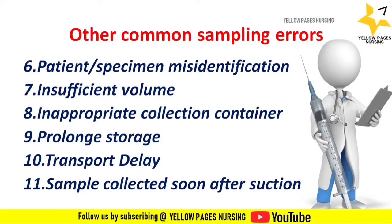A sample collected soon after suctioning may also produce sampling error, because before, during, and after suction we pre-oxygenate the patient, which may cause changes in partial pressure of oxygen readings. Therefore, the sample should be collected 15 minutes after suctioning the patient. These 11 points will help nurses avoid ABG sampling errors.